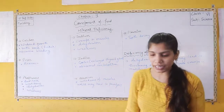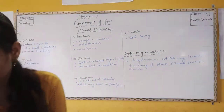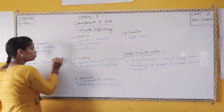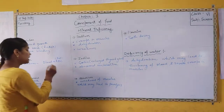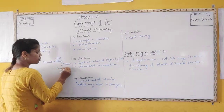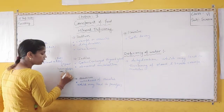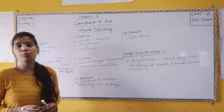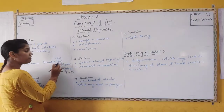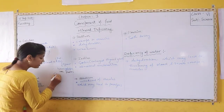Next is iron. What happens when iron is lacking? Iron is a component of hemoglobin, which is found in red blood cells. Hemoglobin is a pigment — it is made of iron and protein. This iron in hemoglobin carries oxygen throughout the body.